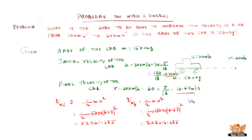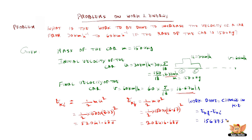The work done is nothing but the change in kinetic energy, which is Ekf minus Eki. Since the velocity has increased, the final kinetic energy is higher. So Ekf minus Eki gives 156375 joules. That means 156375 joules is the work done by the car to increase the velocity from 30 km per hour to 60 km per hour.